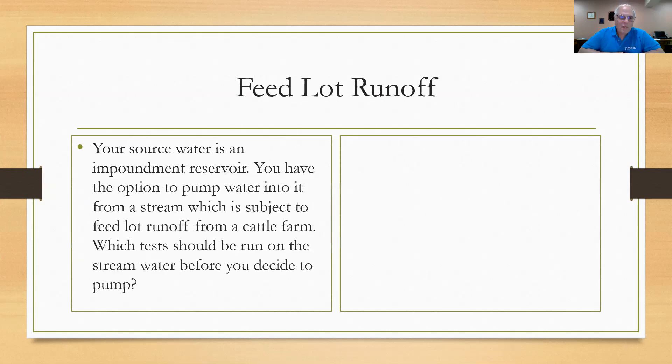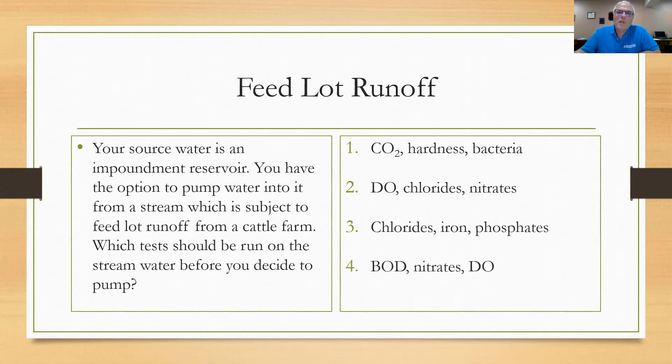This is the feedlot runoff question. A lot of the old water plants had an impoundment reservoir and they had a source water like a stream or river that would run by. And that source water would be subject, the stream would be subject to feedlot runoff. So they had a choice where they had a pump station. They could choose water to be pumped from the stream up to their storage reservoir, and only on days when the water was good. The days when the water was more polluted, they wouldn't transfer it to the impoundment reservoir. That was the beauty of the impoundment reservoir. You could choose only that water that was the best source for you. So you had to be able to go down and take samples of the water and analyze it, determine: do I want to pump today or don't I? We have that option to pump the water. Which tests should be run on the stream before you decide to pump water for today? They give you these choices. They give you number one choice, the carbon dioxide, hardness, and bacteria test should be run. Second choice is dissolved oxygen, chlorides, and nitrates. Third answer is chlorides, iron, and phosphates. And the fourth is BOD, nitrates, and dissolved oxygen. Go ahead and work that through and see if you come up with an answer. We'll go to the next slide and figure it out.